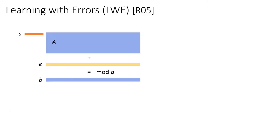Let's start by talking about the learning with errors problem. Learning with errors is essentially the problem of solving a system of approximate random linear equations, modular Q. We have a matrix A that is a short and wide matrix, n by m, and think of m as some polynomial in n. This matrix is uniform modular Q. Q is some global modulus that ranges from being polynomial in n to being exponential in n.